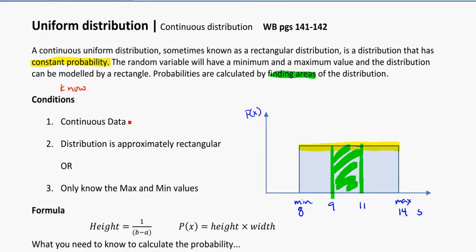We need to have continuous data. And again, those are things like weights and times. Now, the distribution needs to be approximately rectangular in shape.